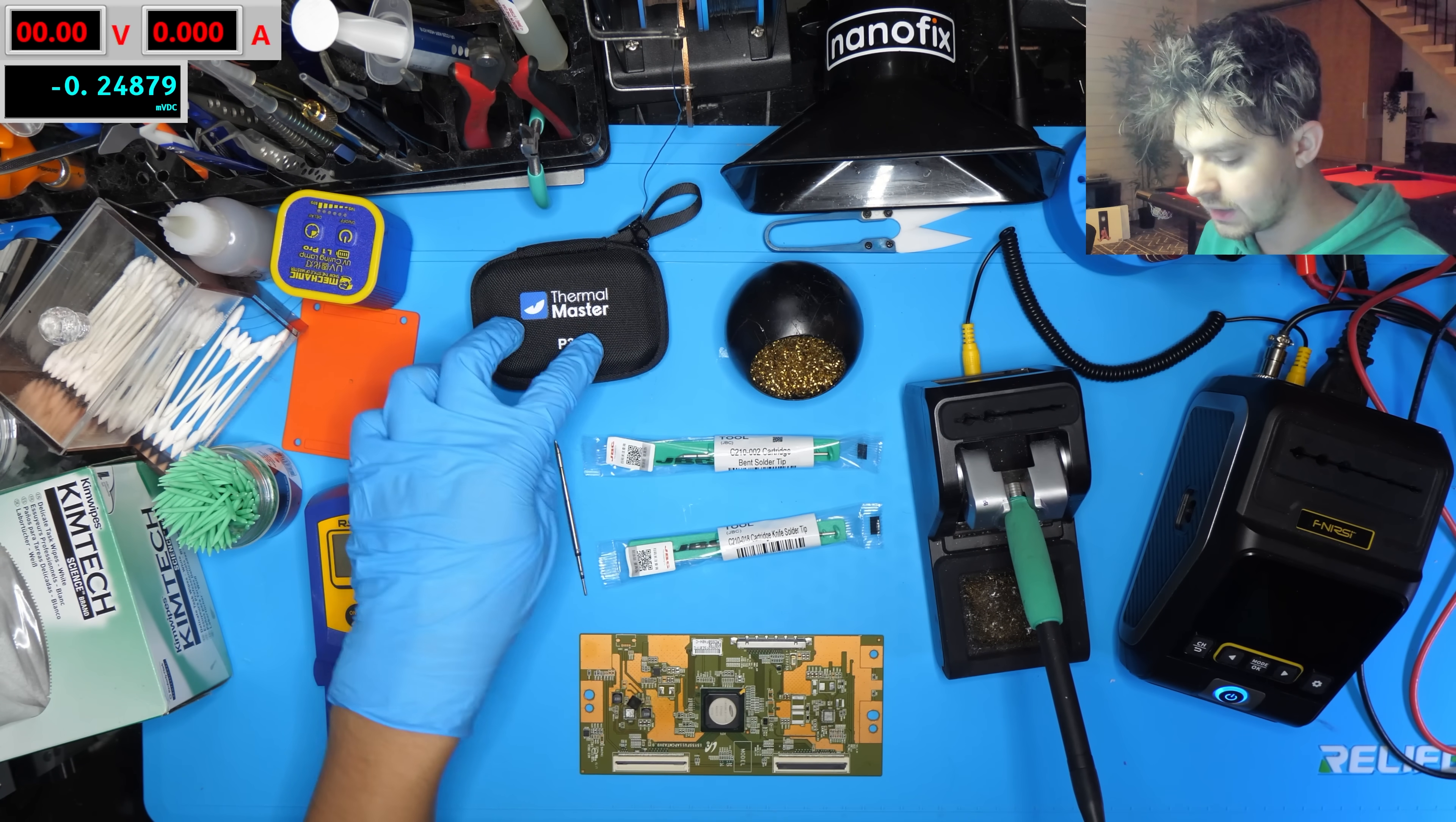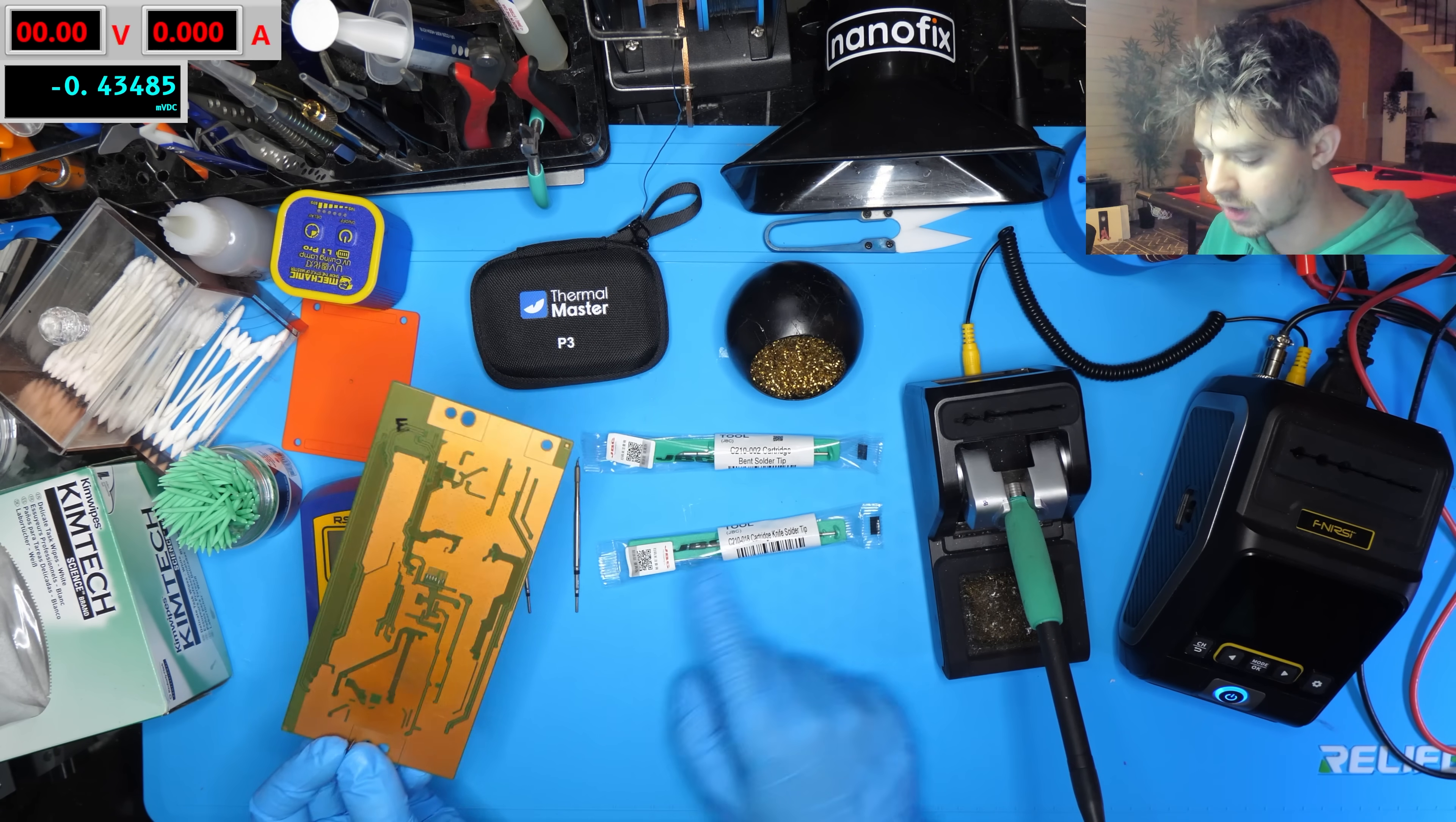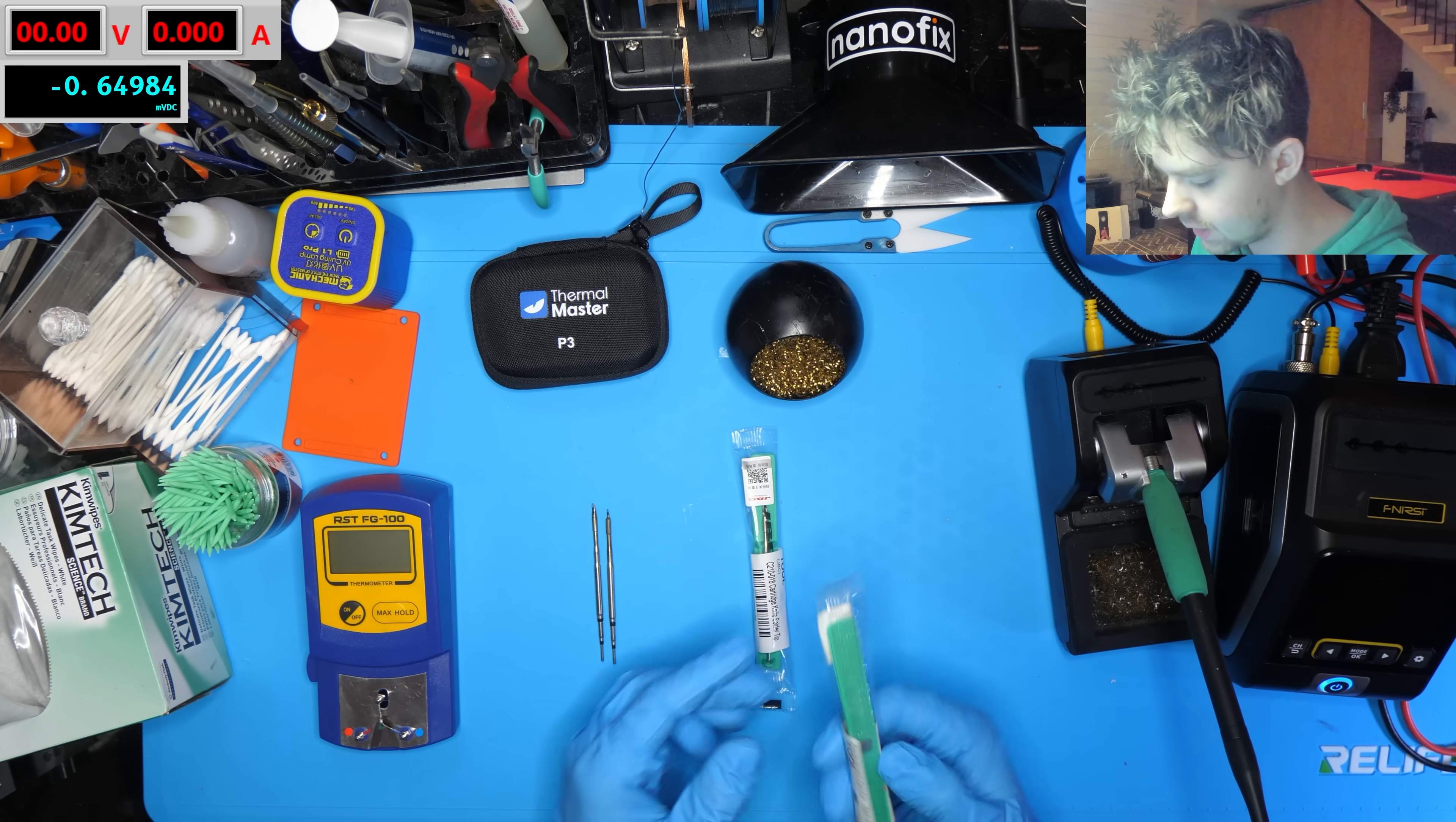We're also going to look at the tips with the thermal camera to see how much of the tip is actually heating, because a lot of these tips, especially the smaller ones, I have a feeling don't get up to temperature at the very tips. Then we're going to look at how they recover when applying heat to big ground planes like the ground pads here on this T-Con board. So let's get started and compare them physically before using them with the iron.